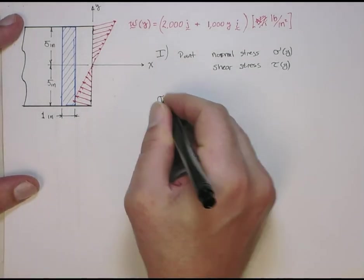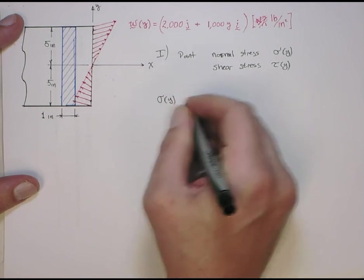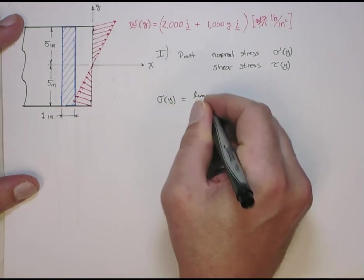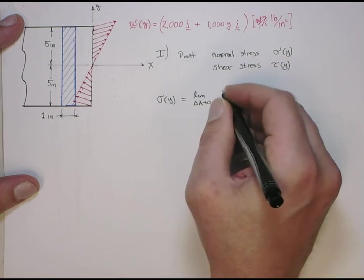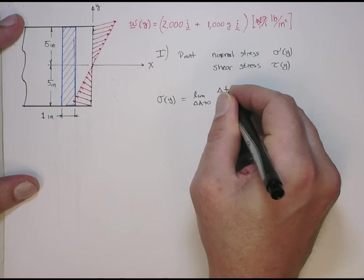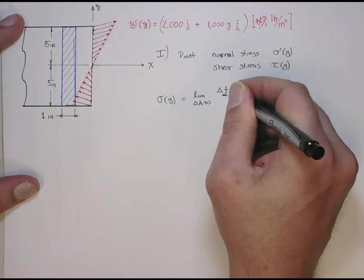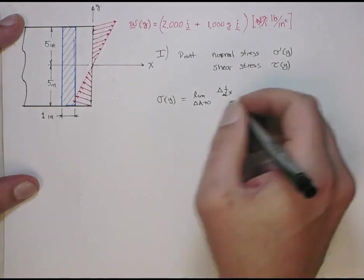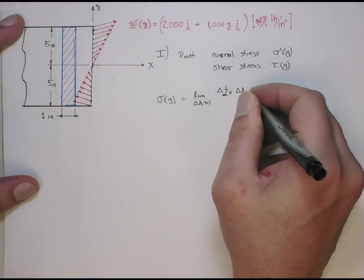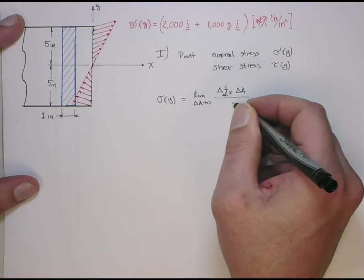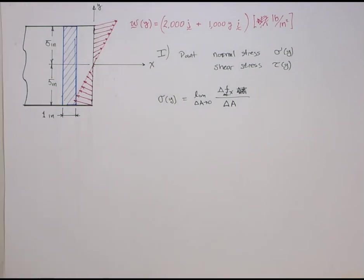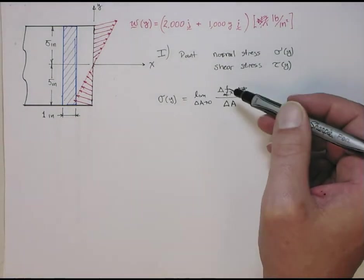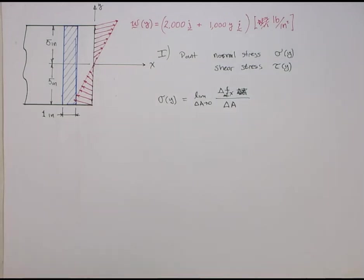So, remember, when we talked about the normal stress, it's the limit as we look at an area going to zero of this differential force vector in the normal direction, in this case, the x direction, over a differential area. Getting ahead of myself there. So, it's the force per area, these little differential forces, the limit as the area goes to zero.